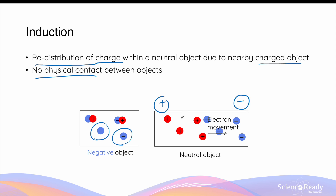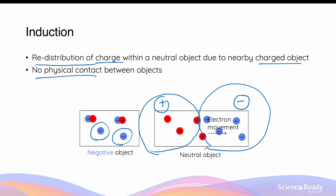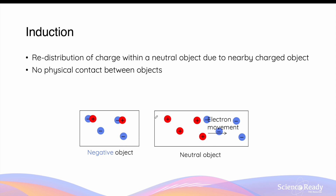This is what we mean by redistribution of charge. Induction does not change the overall charge of the object — it remains neutral overall — but redistributes the charges so that one end becomes positive and the other becomes negative. Since the side closer to the negatively charged object is now positive, there will be an attractive electrostatic force between them, and this neutral object should effectively be treated as a charged one.